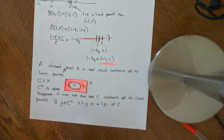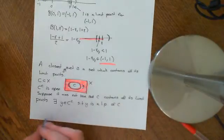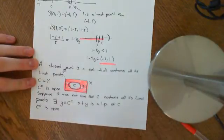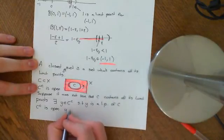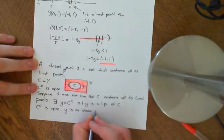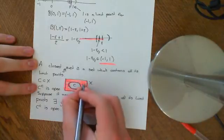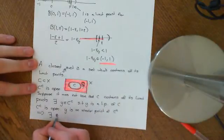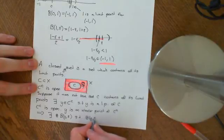If it's not true that C contains all its limit points, then there must exist a limit point that is outside of C — i.e., which is an element of C complement. But we know that C complement is open, since C is closed. And the definition of being open is that all points are interior. So in particular, Y is an interior point of C complement. That means there exists an epsilon neighbourhood — a ball around Y of some size epsilon — such that this ball is completely contained within C complement.